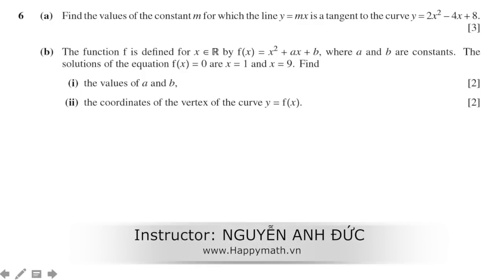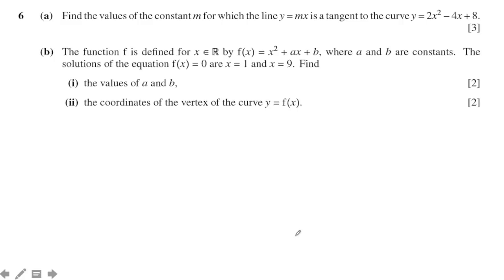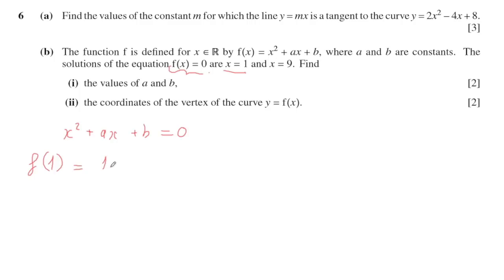Moving on to the second question. The function f(x) equals x squared plus ax plus b, where a and b are constants. The solutions of the equation f(x) equals 0 are x equals 1 and x equals 2. Find the values of a and b. We use the condition that f(x) equals 0, meaning x squared plus ax plus b equals 0 at these roots.